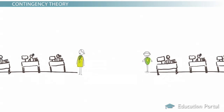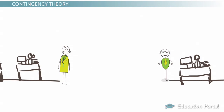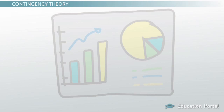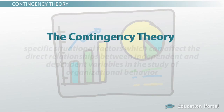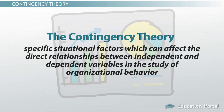There are situational factors that can affect the study of organizational behavior and its prediction of the behavior of employees. The contingency theory explains that there are specific situational factors which can affect the direct relationships between independent and dependent variables in the study of organizational behavior.